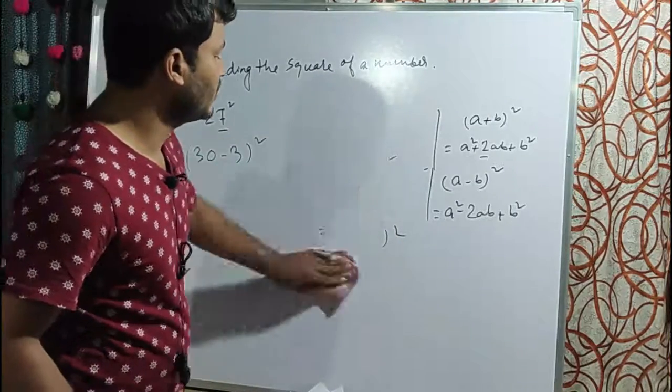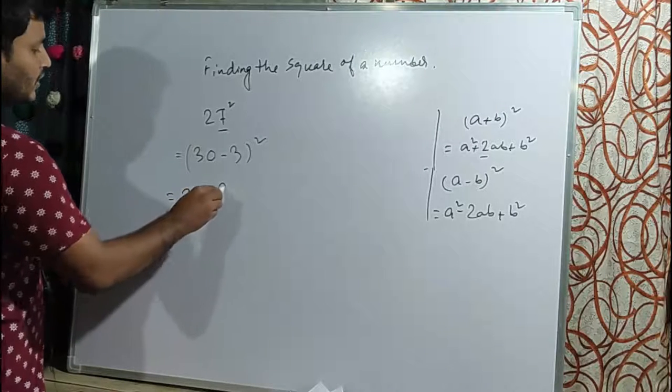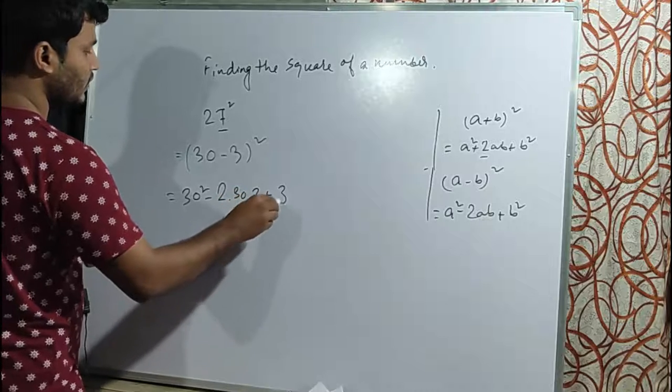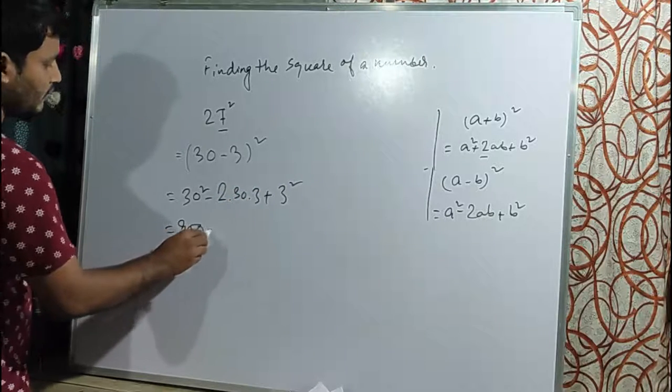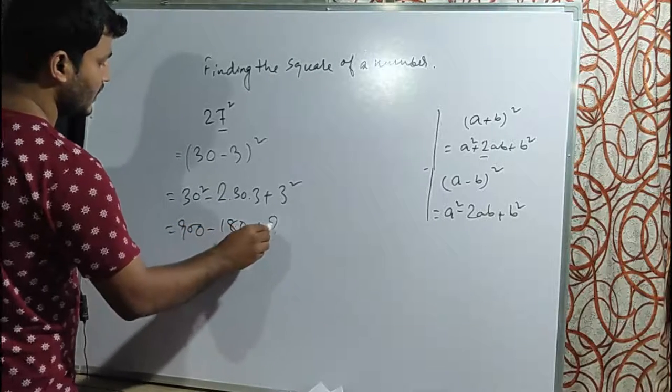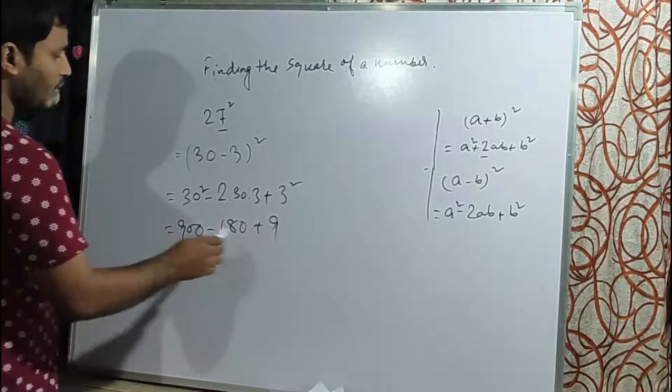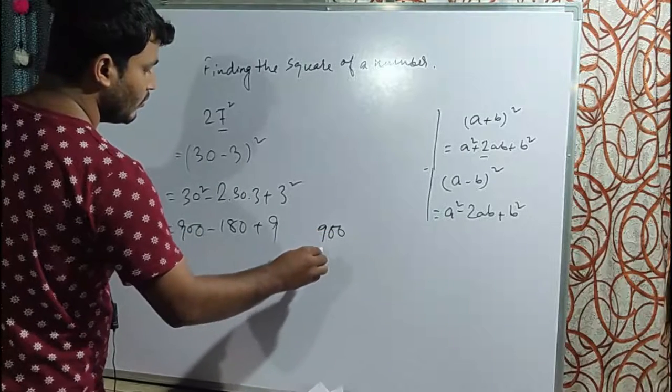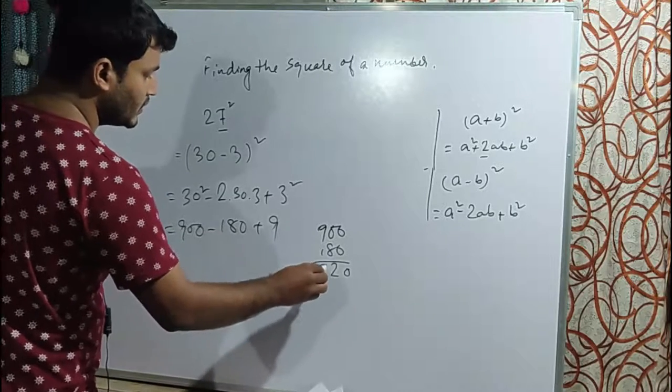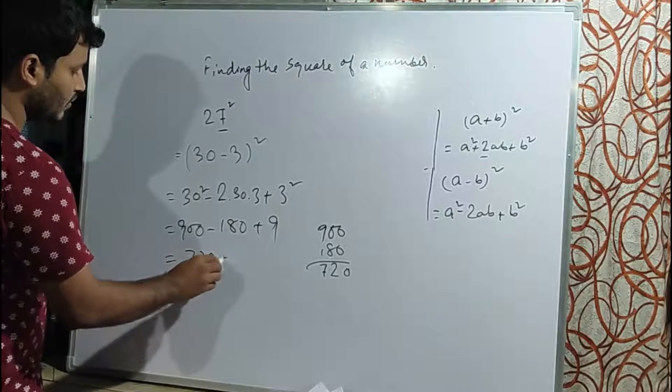Applying the formula: 30² minus 2 times 30 times 3, plus 3². That's 900 minus 180 plus 9. So 900 minus 180 equals 720, plus 9 equals 729.